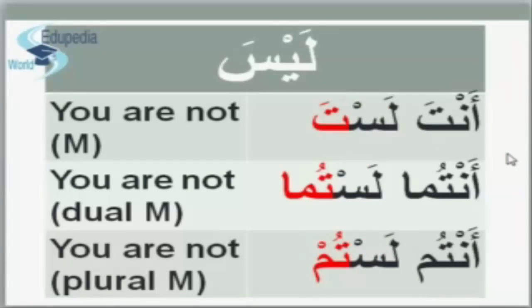Now how to say 'you are not' — singular masculine. 'You are' is أنتَ, and you are not is أنتَ لستَ. There is no يَا, سُكُون on top of سَ, and at the end you add تَ — like the تَ in أنتَ. أنتَ لستَ — you are not, singular masculine.